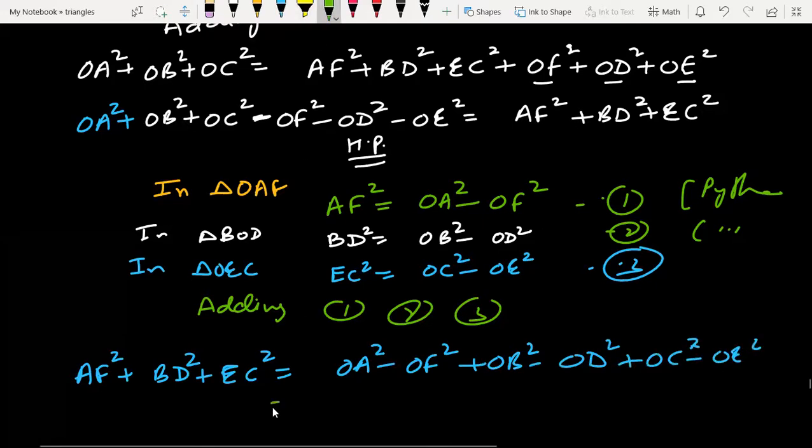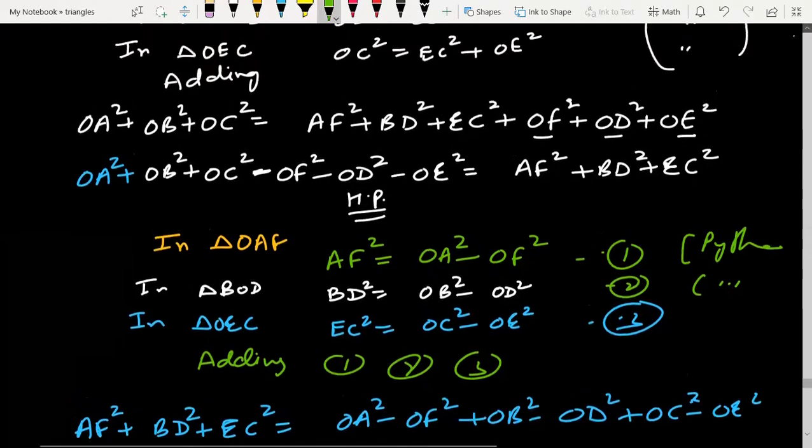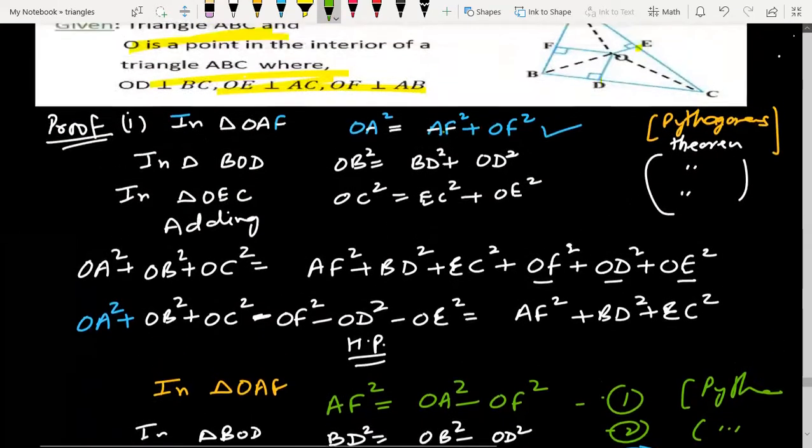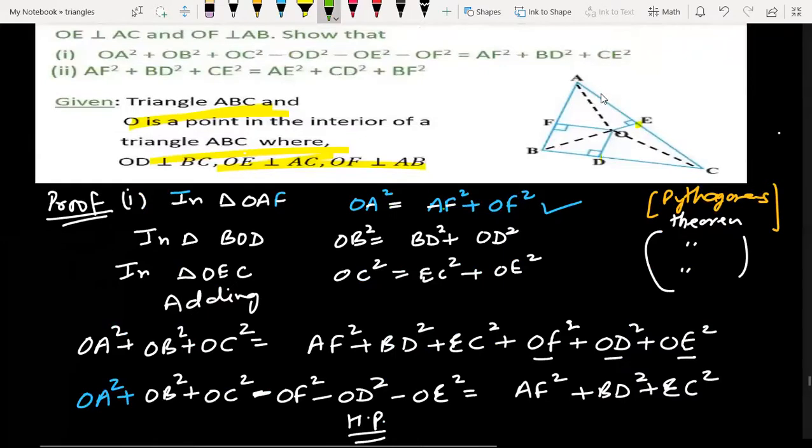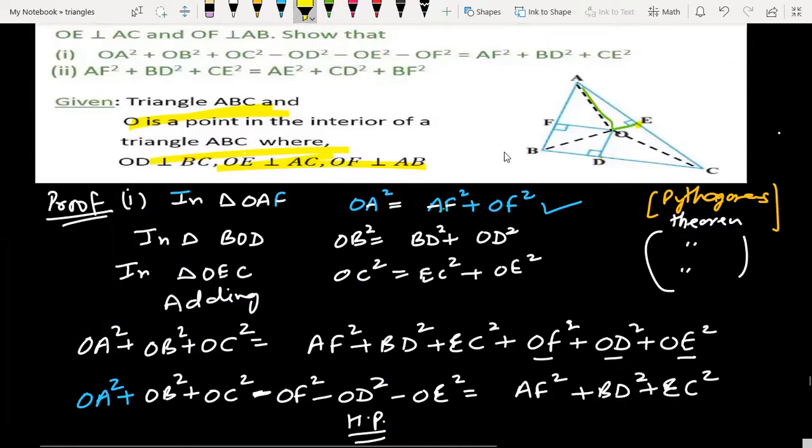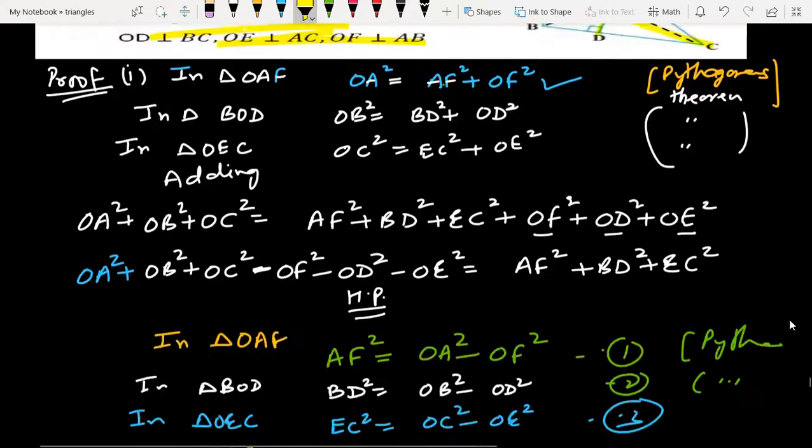Now what we have to do with them? We will arrange them. You have to see this in the figure. This will be the question with the figure. In the right hand, we need AE. So AE will come from OA square minus OE square. Then we need CD. CD will come from OC minus OD. And BF will come from OB minus OF. So we will arrange them with this.